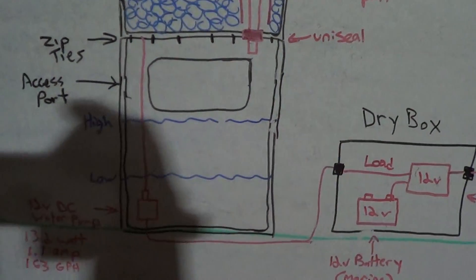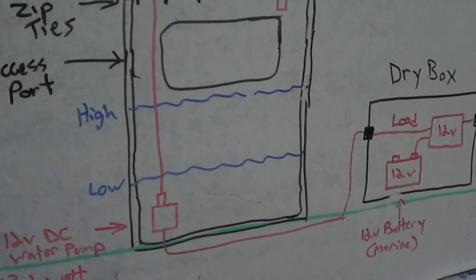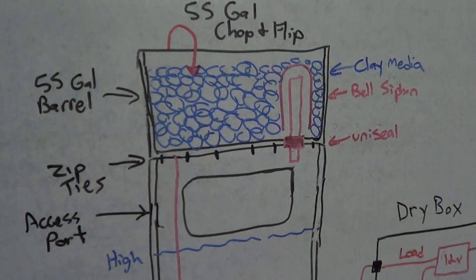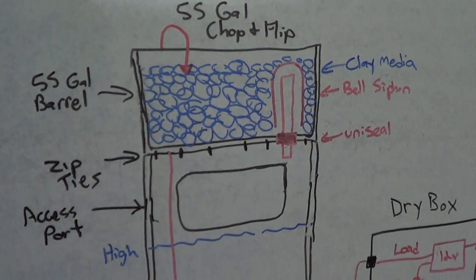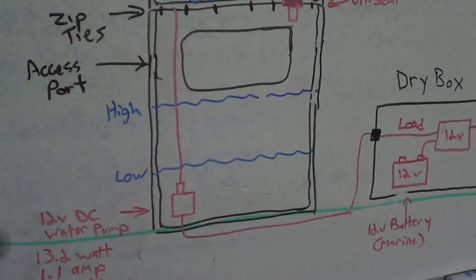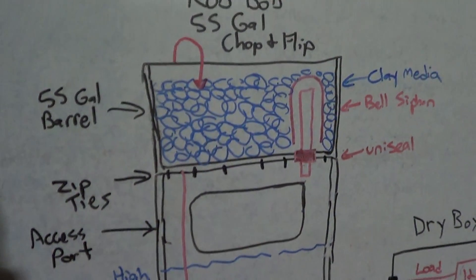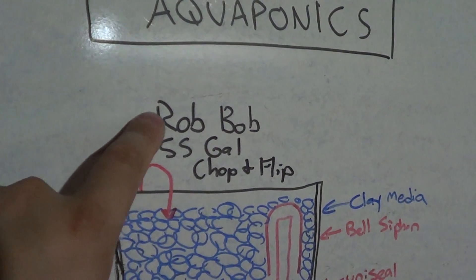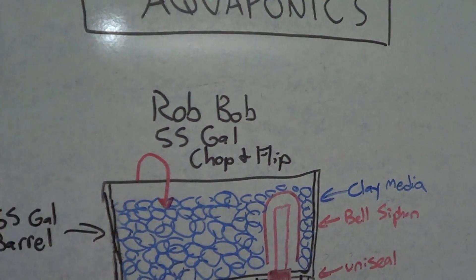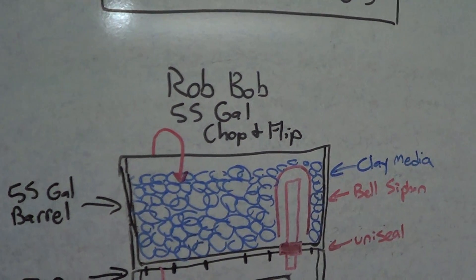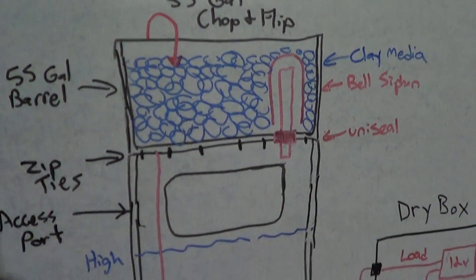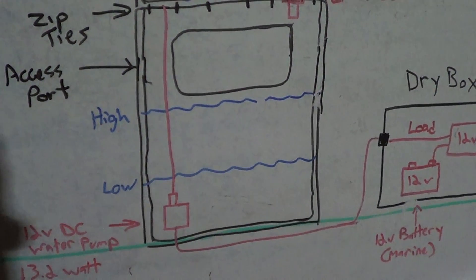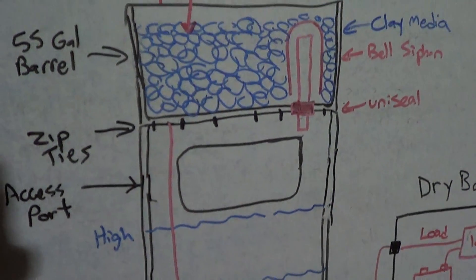So we start with a 55 gallon barrel which is the heart of the system. I'll probably start with one but I might expand it to two or three as time goes on. If you guys haven't followed Rob Bob, he has a great aquaponics and hydroponics channel on YouTube and this barrel essentially is his 55 gallon chop and flip system.